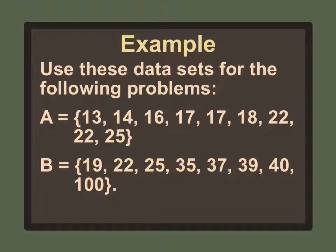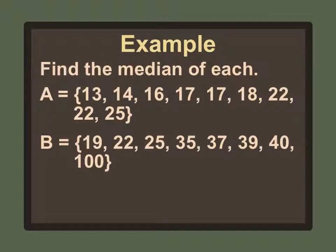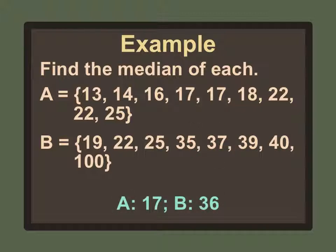Let's get more practice. We have two sets of data — Set A and Set B — both already in order from least to greatest. First, we find the median of each. The median of A is 17 exactly. For B, the two middle numbers are 35 and 37, and since a median can't be two numbers, we take the average to get 36. So the median for A is 17 and for B is 36.